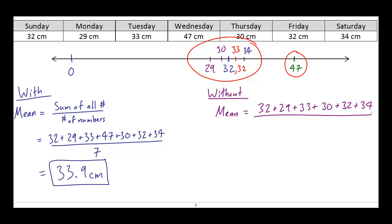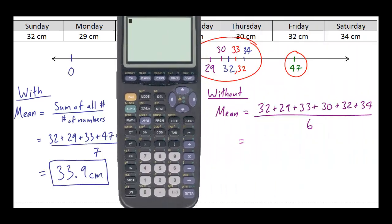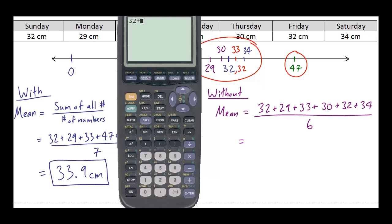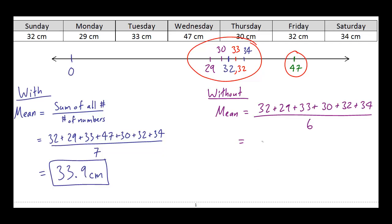Now remember in this case that we've thrown away one of our data points. So we only have one, two, three, four, five, six numbers that we're working with. So divide by six and I get around 31.7 centimeters.